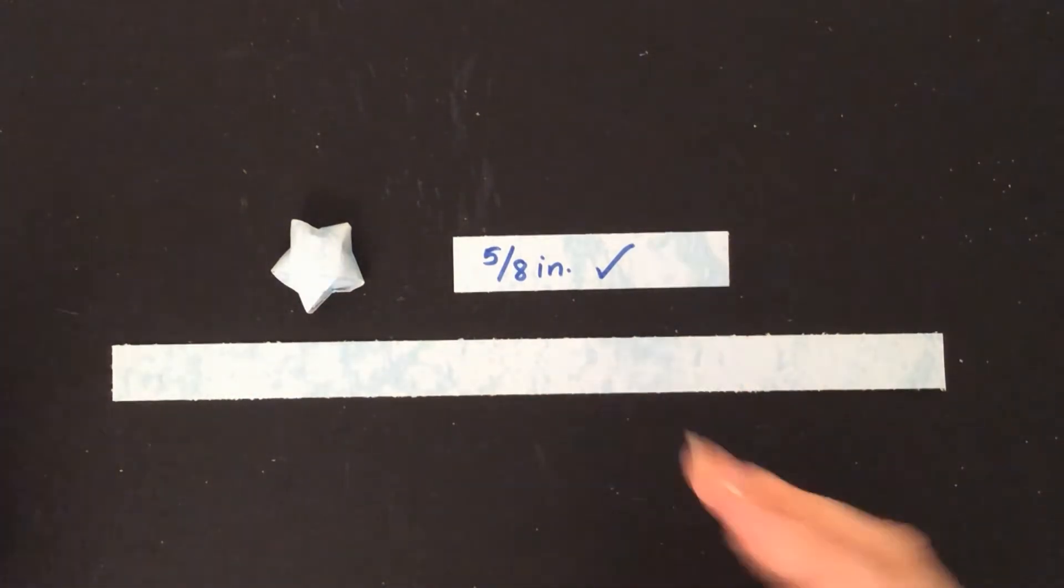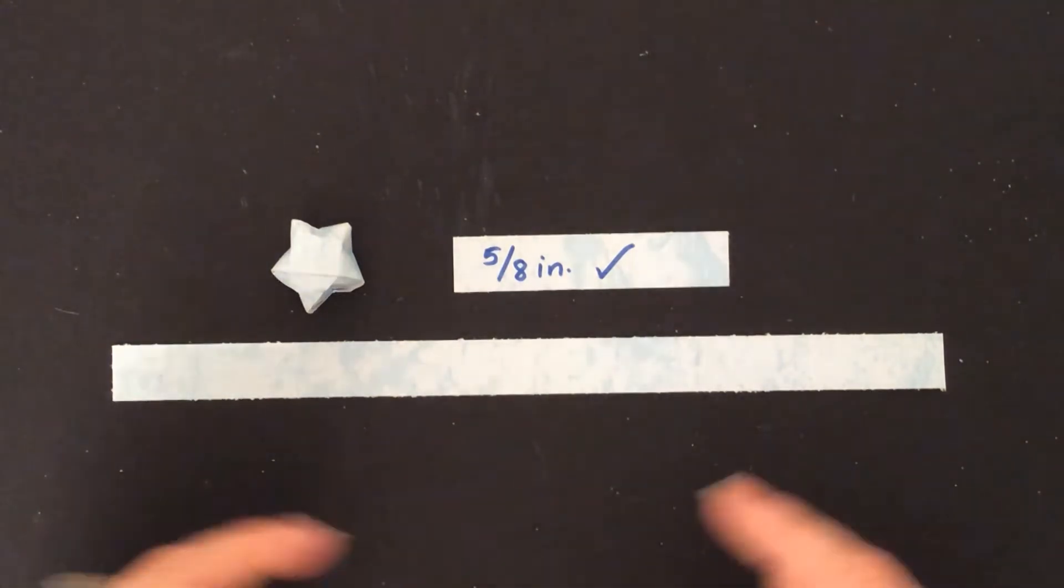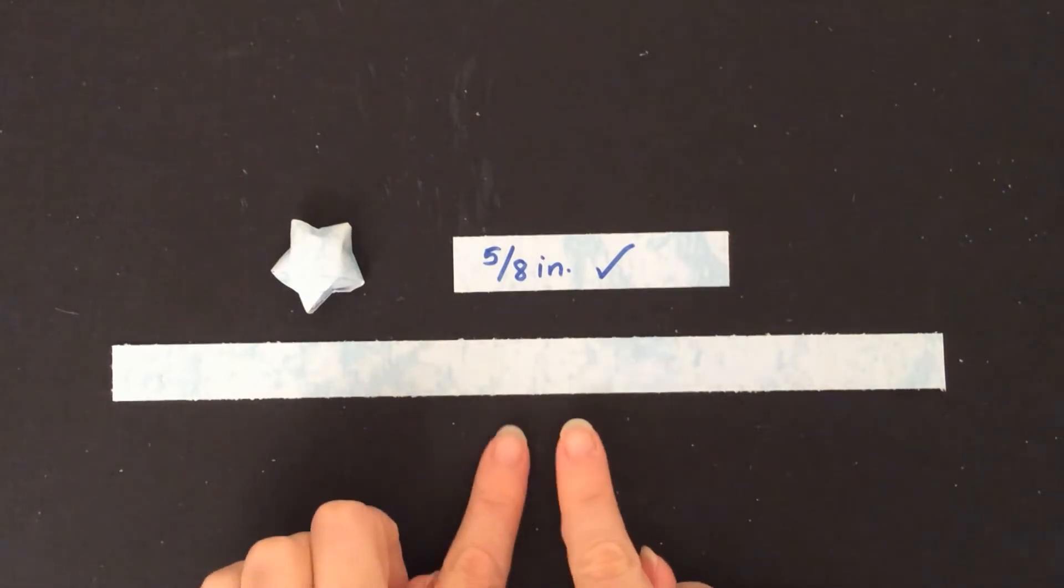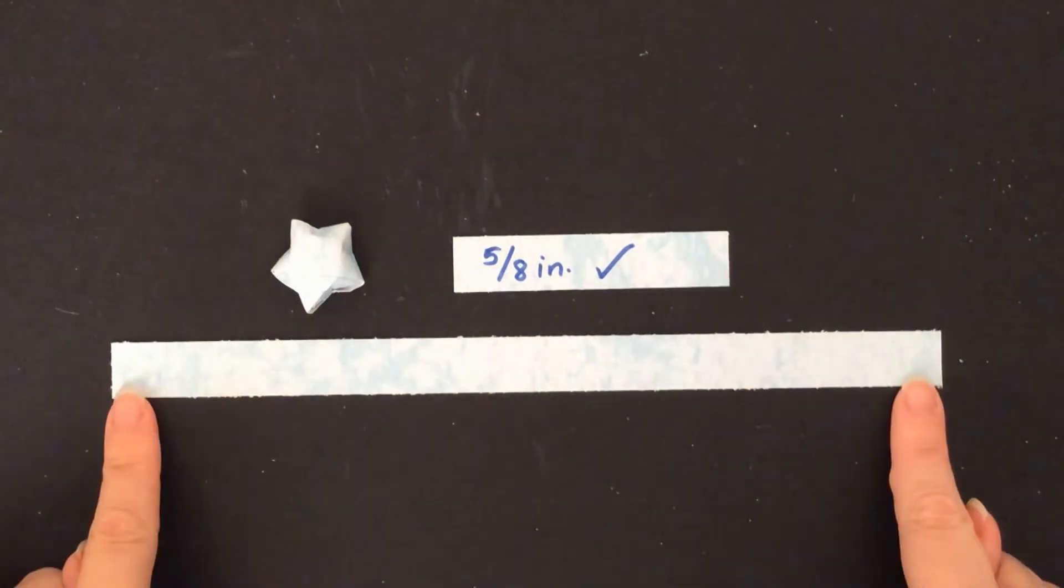Anything less than that ran the risk of not getting as far as you needed to around it in order to make it a substantial star. So once again, five eighths of an inch wide by nine inches long.